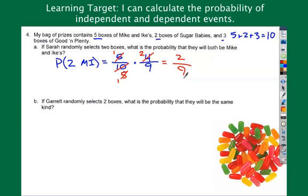All right. This one's interesting. Garrett randomly selects two boxes. What is the probability they will all be the same kind? Now, there's three ways that could happen. I could get two Mike and Ikes or two sugar babies or two good and plenty. So, we have to go through this three separate times.